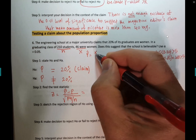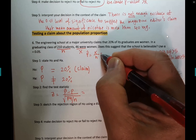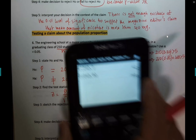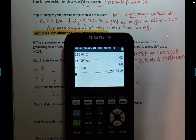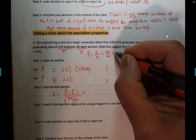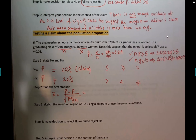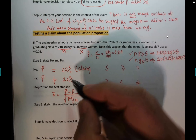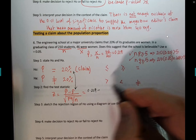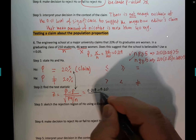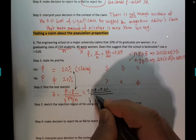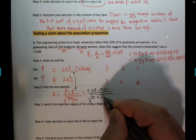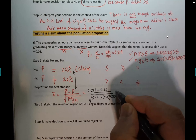p-hat is x over n — 46 divided by 210 is 0.219. So: 0.219 minus p from the null hypothesis, 0.20, divided by sqrt(0.2 × 0.8 / 210). The only proportion test you can use on the calculator is right there — we used 1 and 2 already, now we'll use number 5: 1-PropZTest.